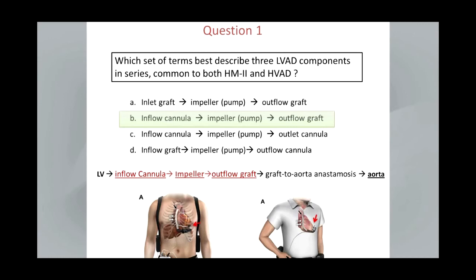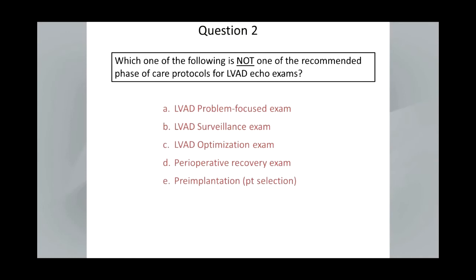Here's the inflow cannula with the red arrow pointing to that — this can be imaged from parasternal and apical views generally for two-dimensional and Doppler imaging. The impeller device shown with this red arrow cannot actually be seen with echocardiography as it's outside the heart. And then the outflow graft is shown with this red arrow.